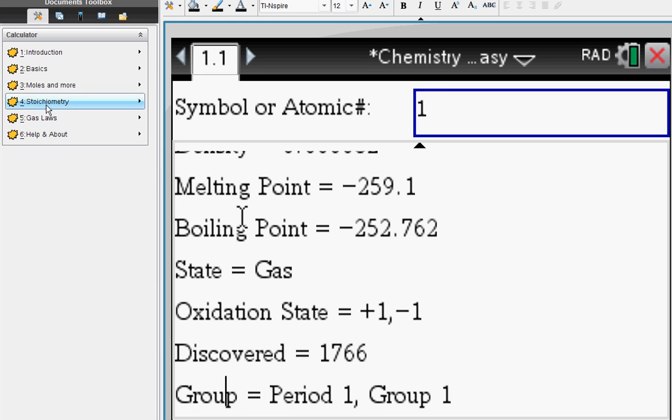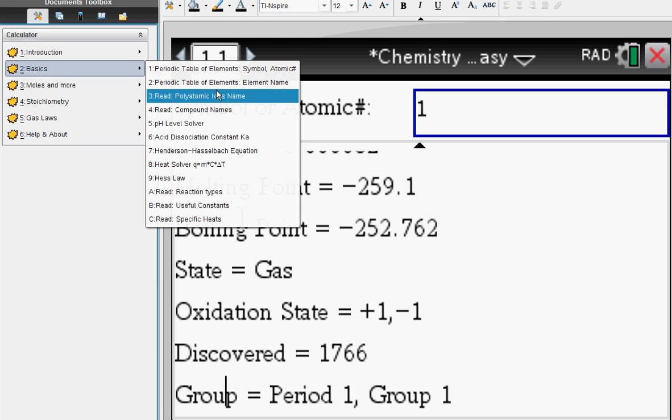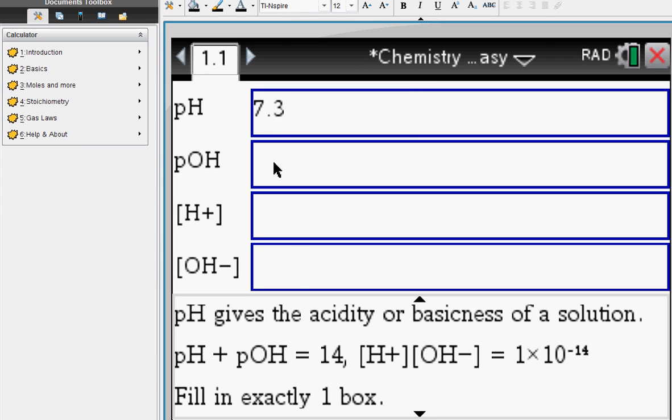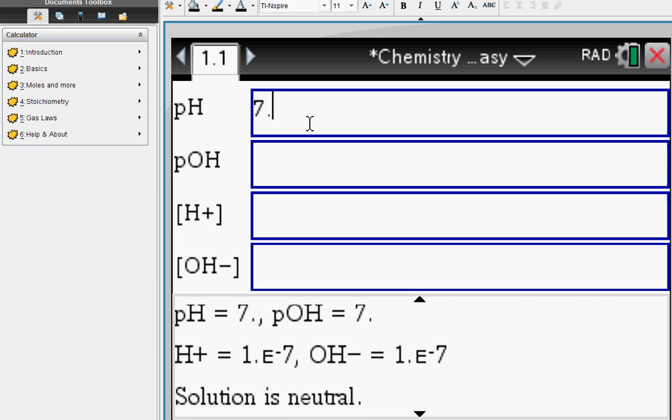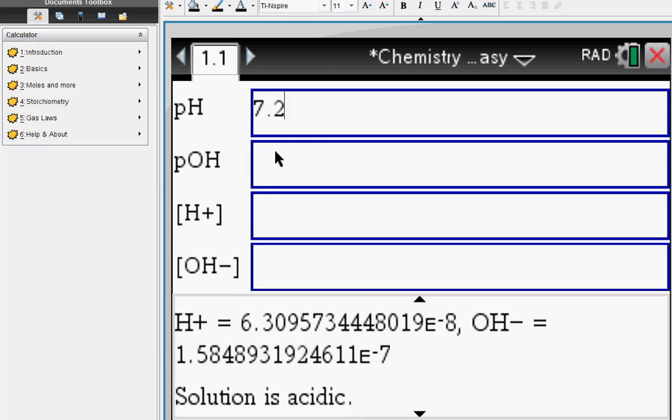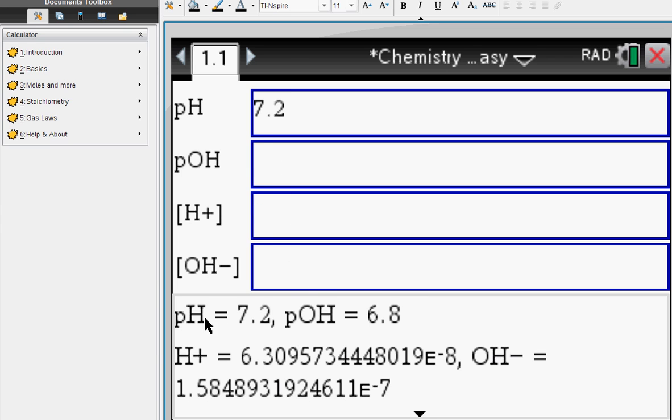pH level solver: fill in exactly one box such as the pH box and you immediately get all your other answers. You have to scroll on the bottom to view the remaining answers.